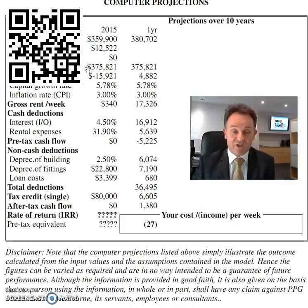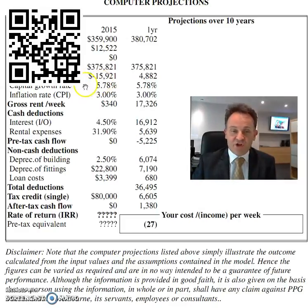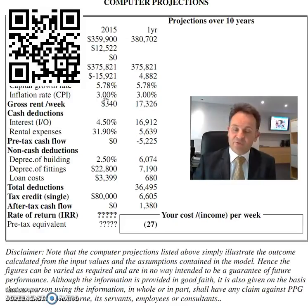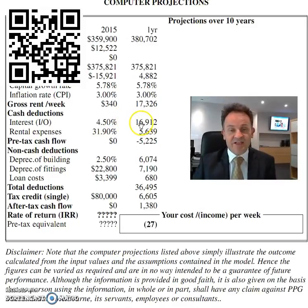Your loan cost is $33k, so the total loan amount you're going to borrow is about $375,821. I've based it on a 5.78% capital growth rate for the area, the inflation rate is set at 3%, and I've put a rental return of $340 per week.